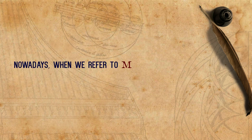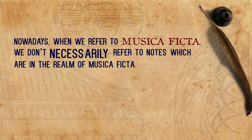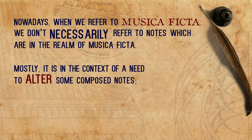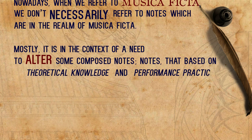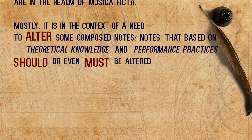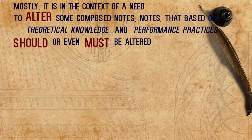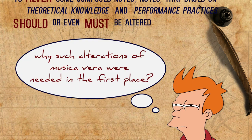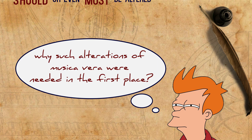Nowadays, when we refer to musica ficta, we don't necessarily refer to notes which are in the realm of musica ficta. Mostly, when the term comes up, it is in the context of a need to alter some composed notes — notes that, based on theoretical knowledge and performance practices, should or even must be altered using a fa or a mi, depending on the case. Setting aside our own ficta problems when trying to understand and perform early music for now, we should first understand why such alterations of musica vera were needed in the first place, in the stage of understanding and composing music.